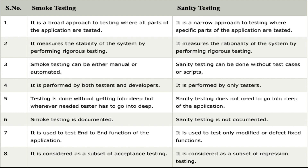Last point: smoke testing is considered a subset of acceptance testing, because we are accepting or rejecting the build received from the development team. Sanity testing is considered a subset of regression testing, because we are testing only the impacted functionalities that may be affected by defect fixes or new functionality introduced in the software.